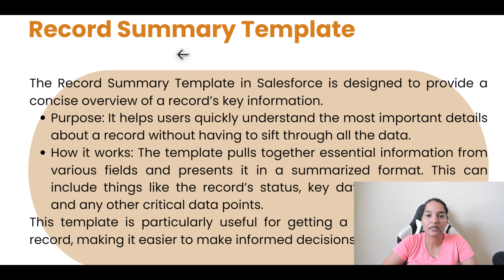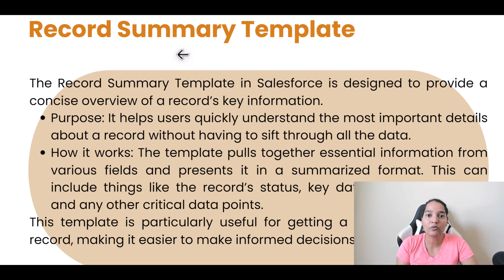What this template will help you with is basically creating a record summary. On a particular record there can be hundreds of fields and not every field you have to look at before you make a decision. For example, on the opportunity object there are certain fields you're interested in, and rather than glancing through all those fields, if there is a place where you can get a quick summary of that opportunity record, wouldn't that be great? That is exactly what this record summary template does — it creates a concise overview of the key information of your record.